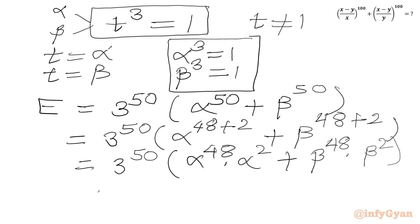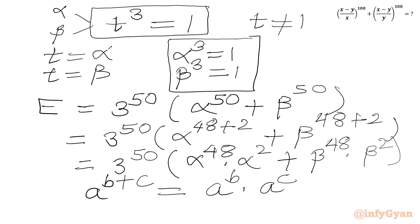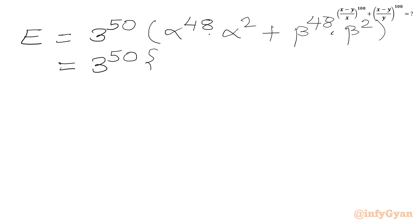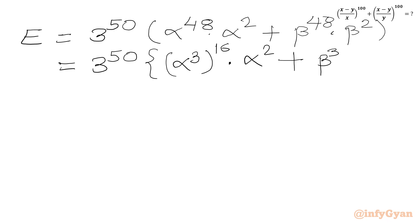Here I have used the exponent law a to the power b plus c equals a to the power b times a to the power c. Now alpha to the power 48 can be written as alpha cubed whole power 16, since 16 times 3 is 48, times alpha squared. Similarly beta to the power 48 can be written as beta cubed whole power 16 times beta squared.